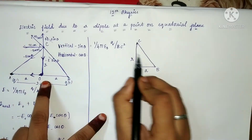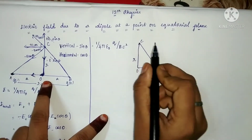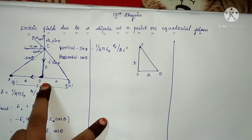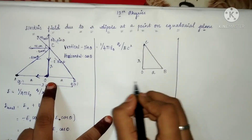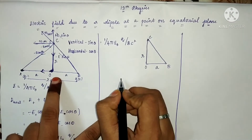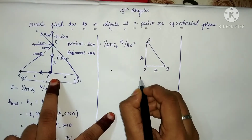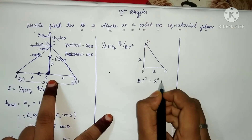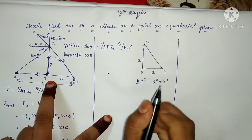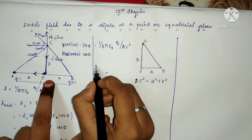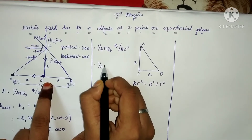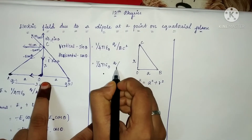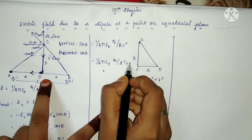If you look at this, it is a right-angle triangle. We know the rule — Pythagoras Theorem. The hypotenuse squared equals opposite squared plus adjacent squared. So bc² equals a² plus r². Therefore bc² equals a² plus r², and so E equals 1 by 4π ε₀, q by (a² plus r²).